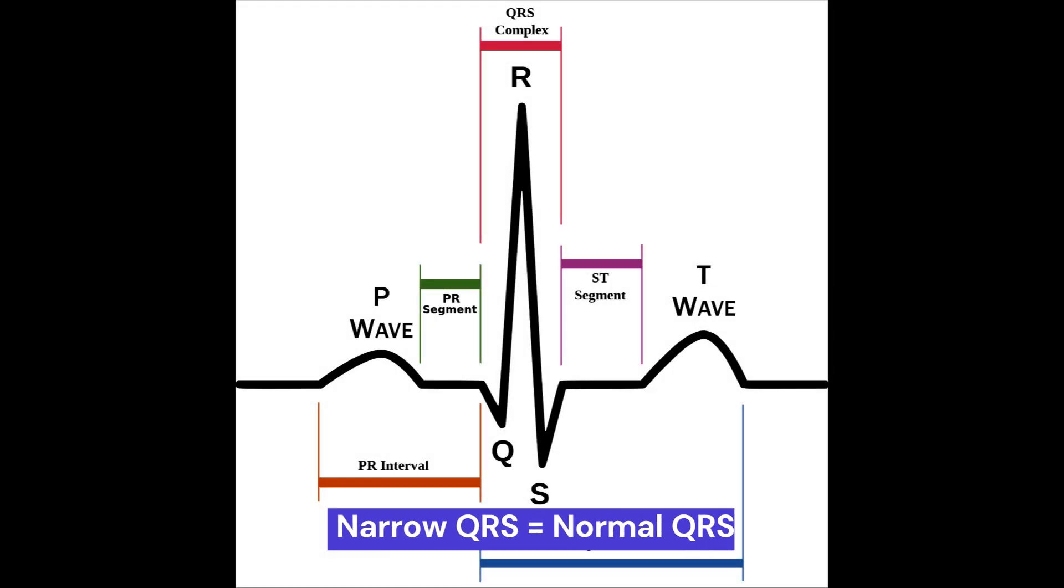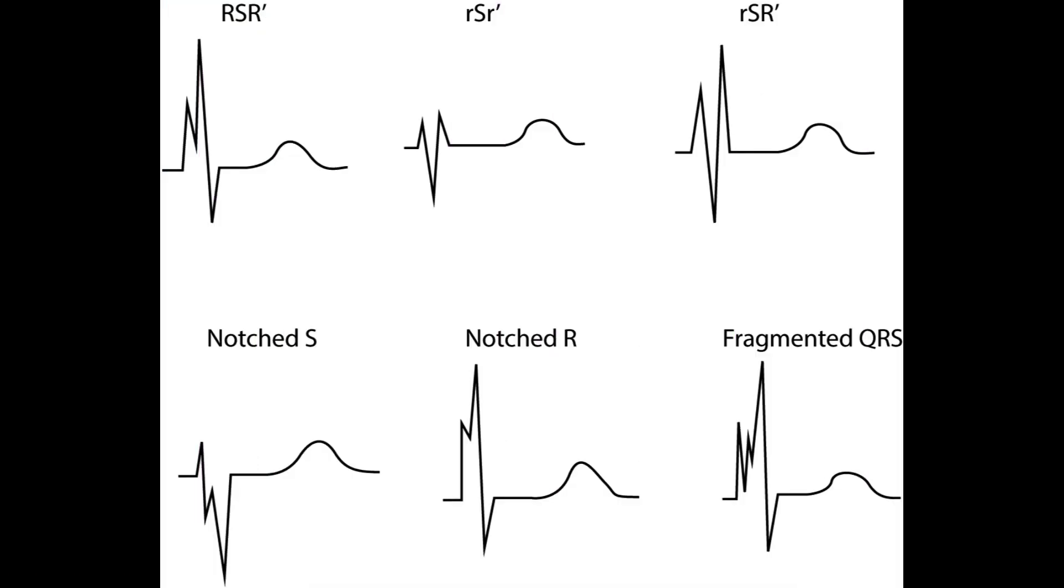Normal QRS complexes are narrow, or narrow means normal. Variations in morphology, such as notching or slurring of the QRS complex, can be normal or can indicate underlying heart disease.